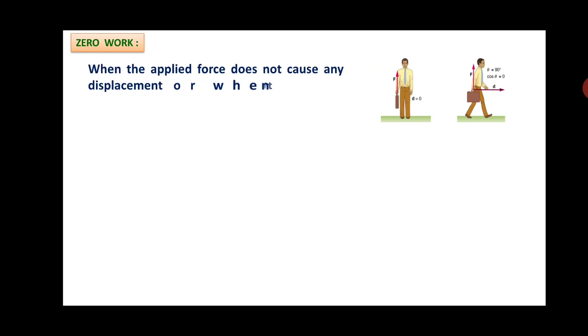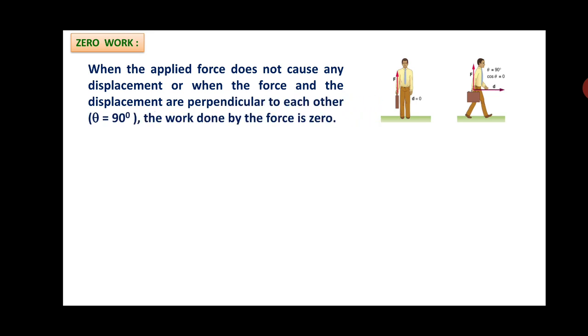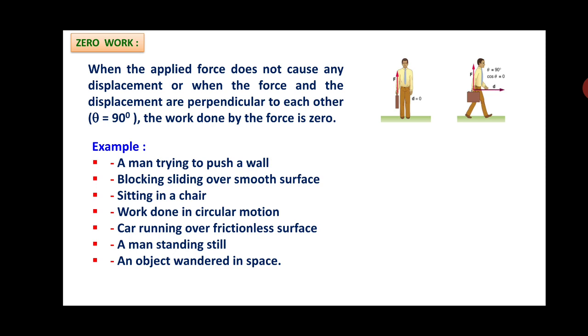Now the last one, zero work. You can see here two persons. When the applied force does not cause any displacement, or when the force and the displacement are perpendicular to each other, that is θ = 90° in the second figure, the work done by the force is zero. Examples are: a man trying to push a wall, a block sliding over a smooth surface, sitting in a chair, work done in circular motion, car running over frictionless surface, a man standing still, an object wandering in space. All these are showing zero work.